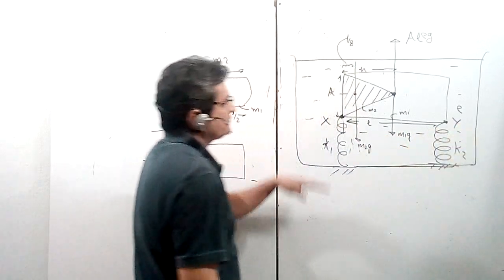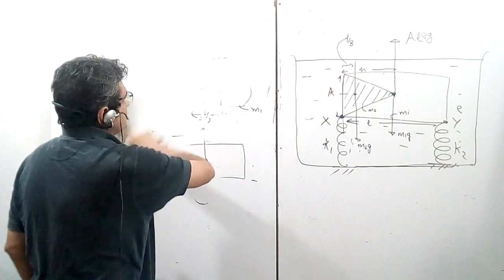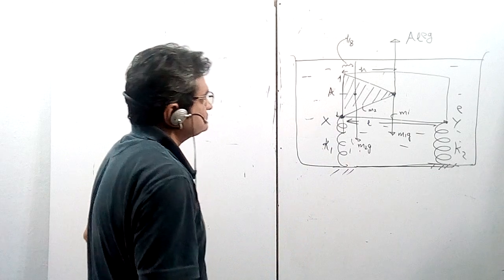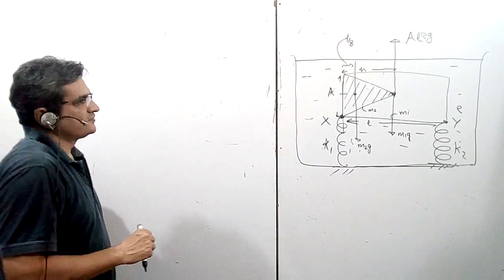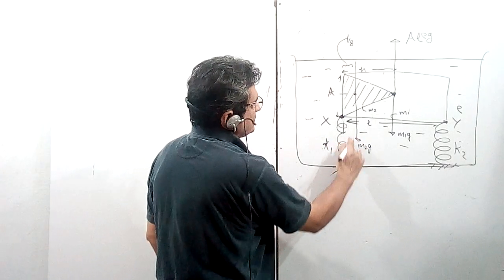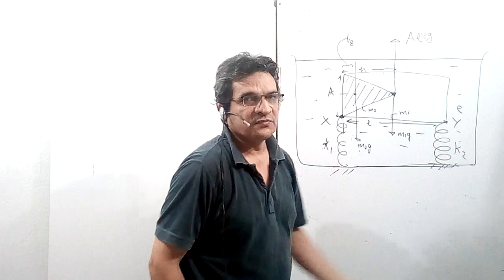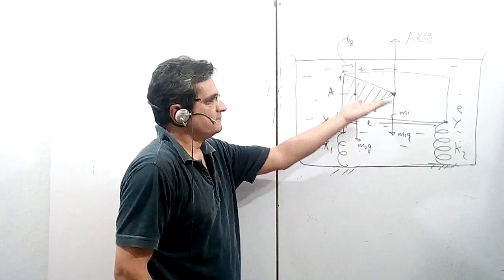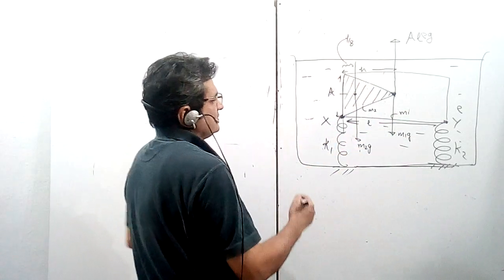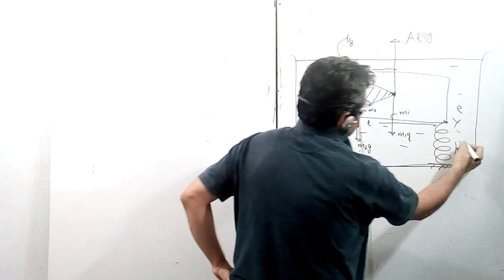Let this end be point X and the other end be point Y. In such problems, first find the total vertical force balance, then find moments about one of the points, either X or Y. To keep the system horizontal, the compression in both springs must be equal — let the compression be delta in each.